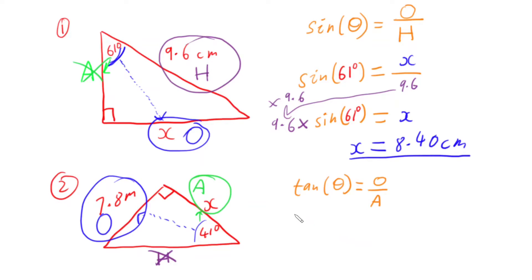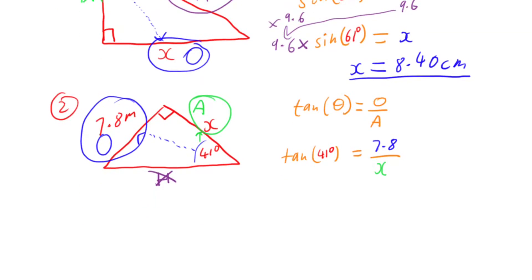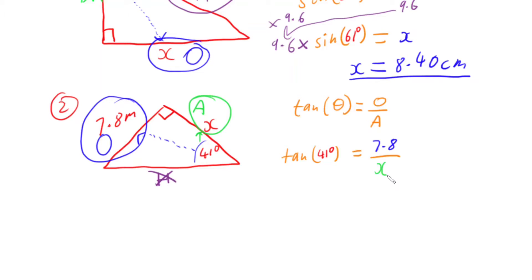Putting my information in, tan of 41 degrees equals the opposite side 7.8 over the adjacent side X. But our adjacent side is unknown, it's just X. Now X is on the bottom. The full algebraic process is that X multiplies up in front of the tan, and then you divide tan below the 7.8.